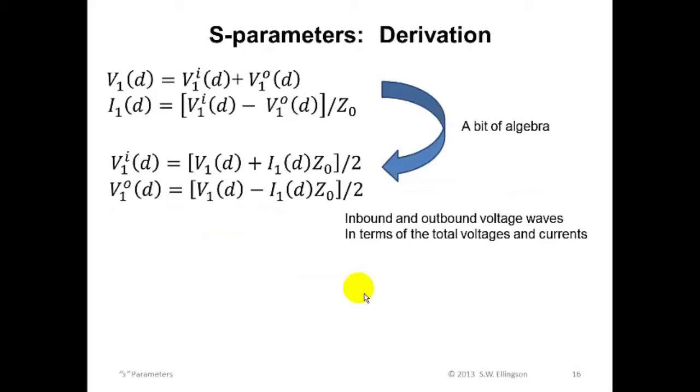Now, I'd like to take these equations for total voltage and total current, shown at the top here, and rearrange them a bit to get expressions for the inbound and outbound voltage waves, V super I sub one, V super O sub one, in terms of these total voltages and currents. And these are the resulting expressions. I'm just going to show you these expressions, and I'll skip the details. But I assure you that this is a pretty straightforward step involving only simple algebra, and I encourage you to confirm this on your own.